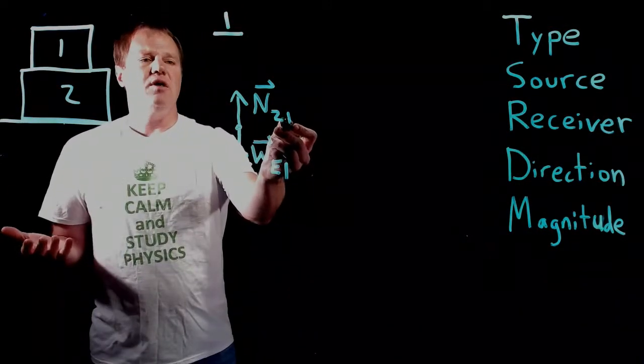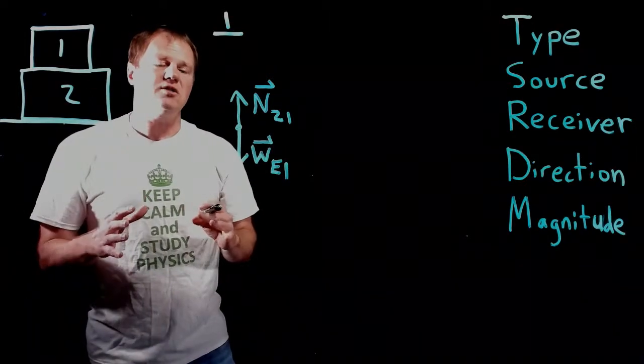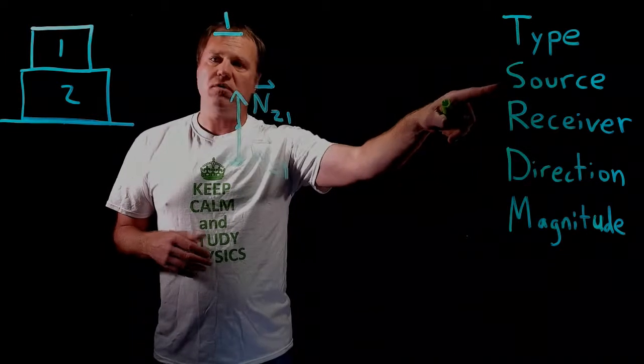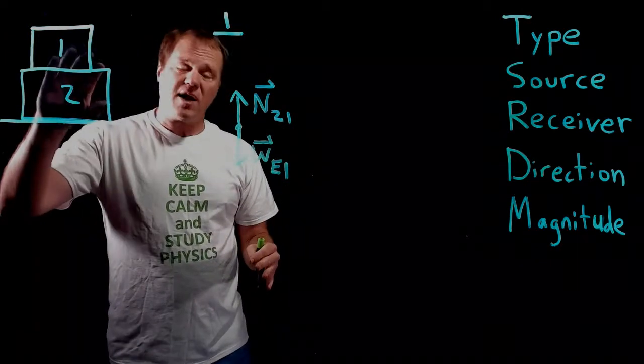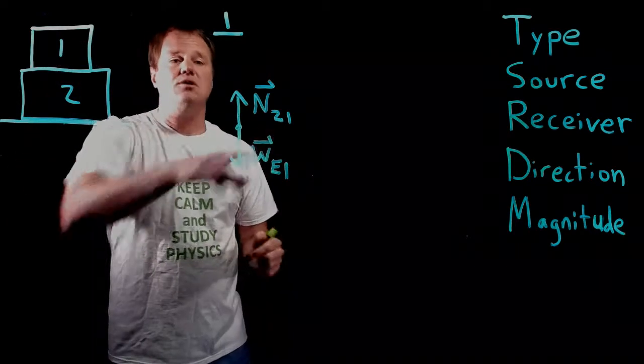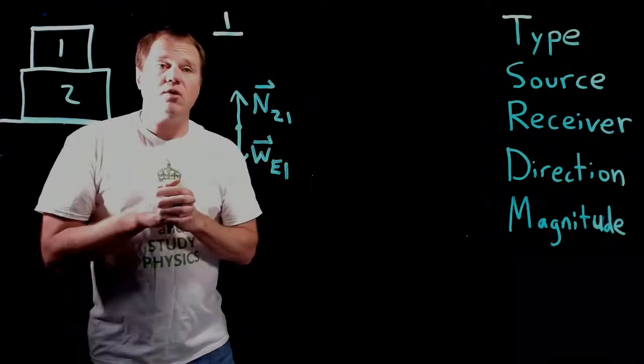Now it's tempting to think about the floor as what's holding up block one, but that's not correct in terms of the physics. Whenever we're talking about the source of the force, it has to be the proximate cause. Block two is directly acting upon block one, so that's to whom we attribute that force. That's it for block one.